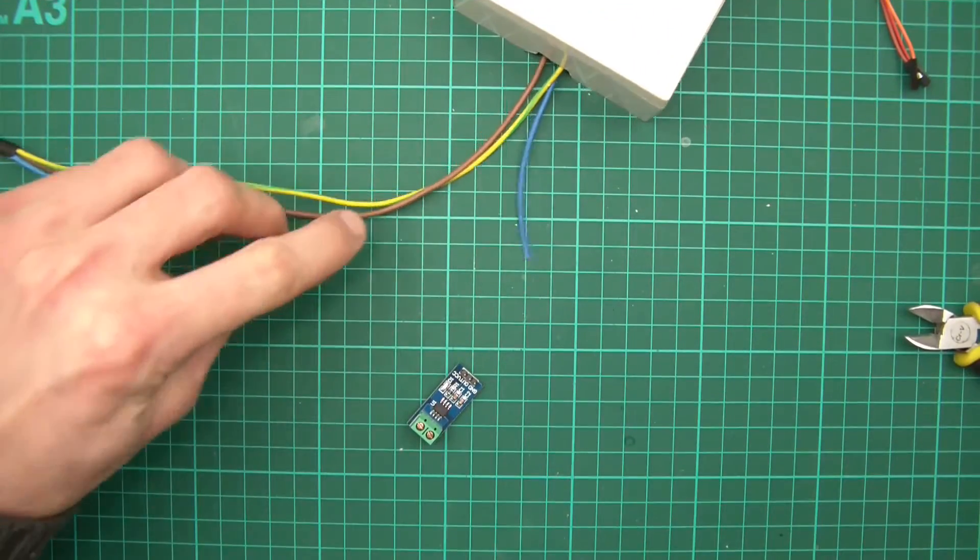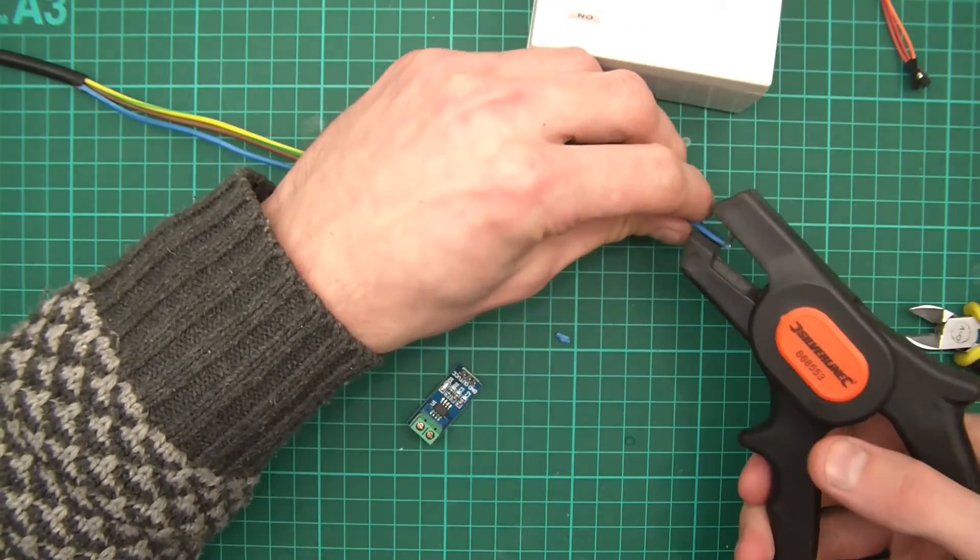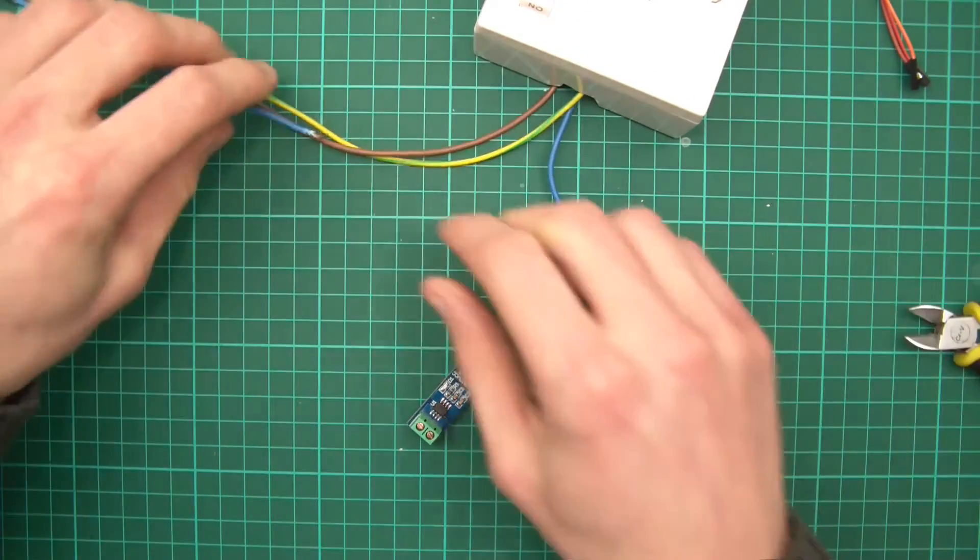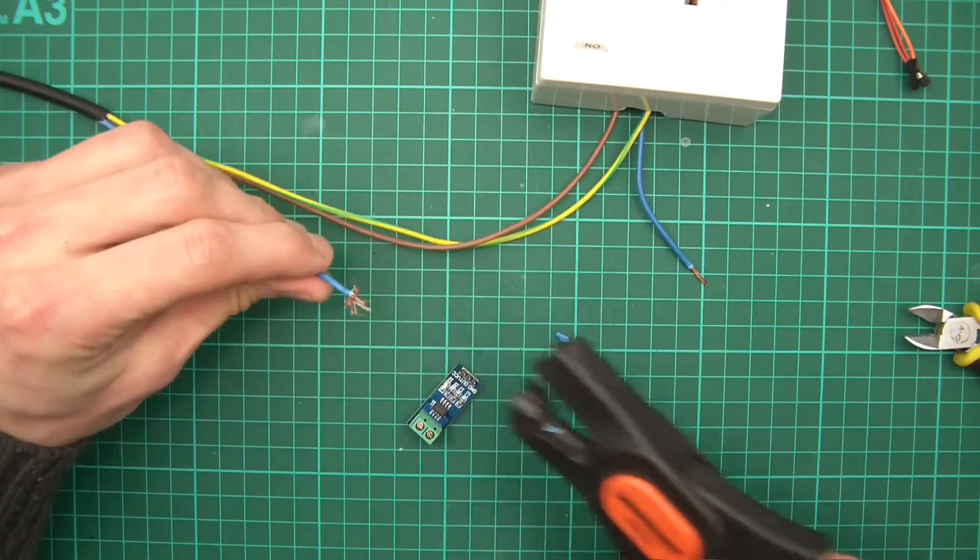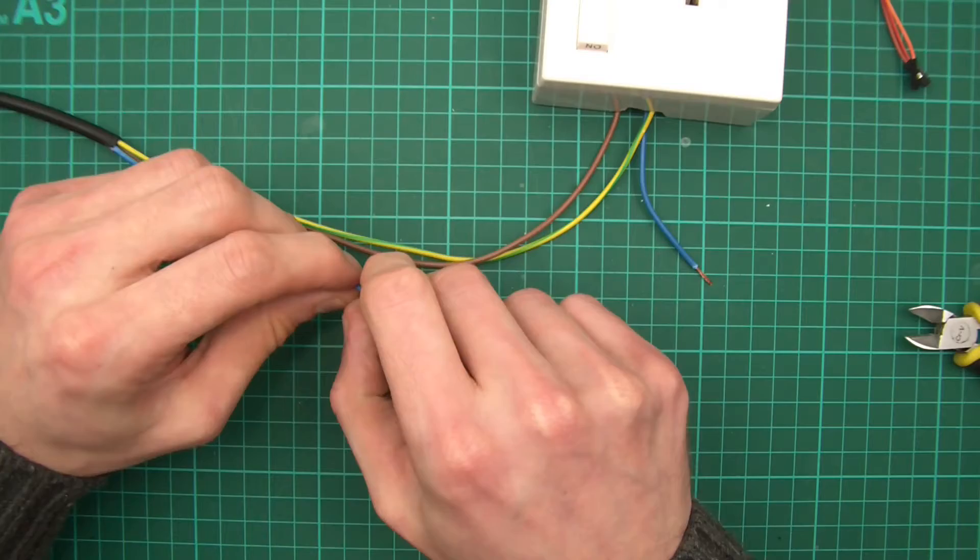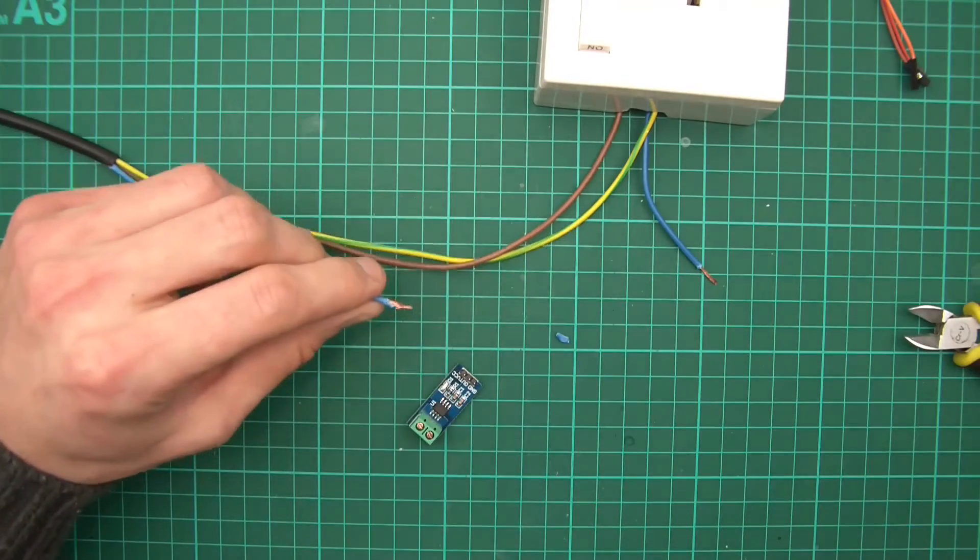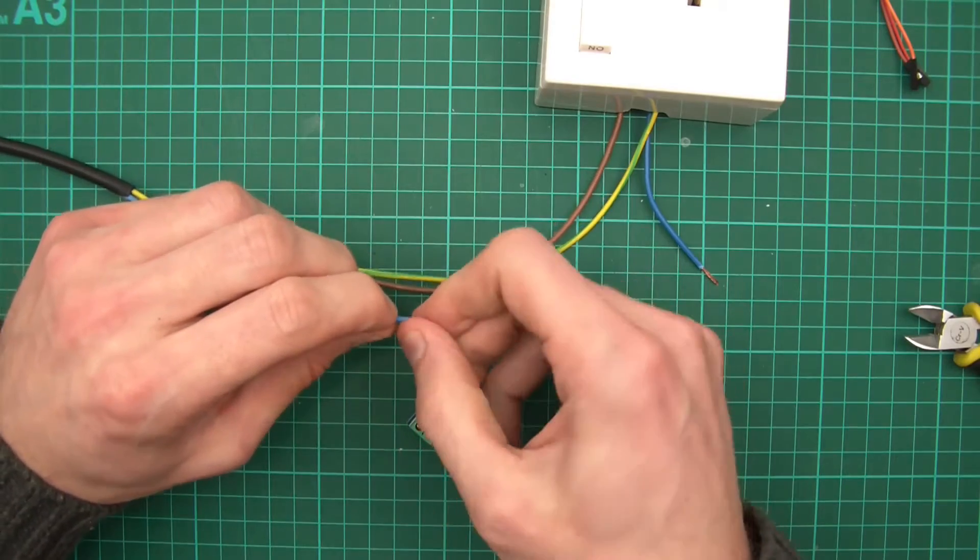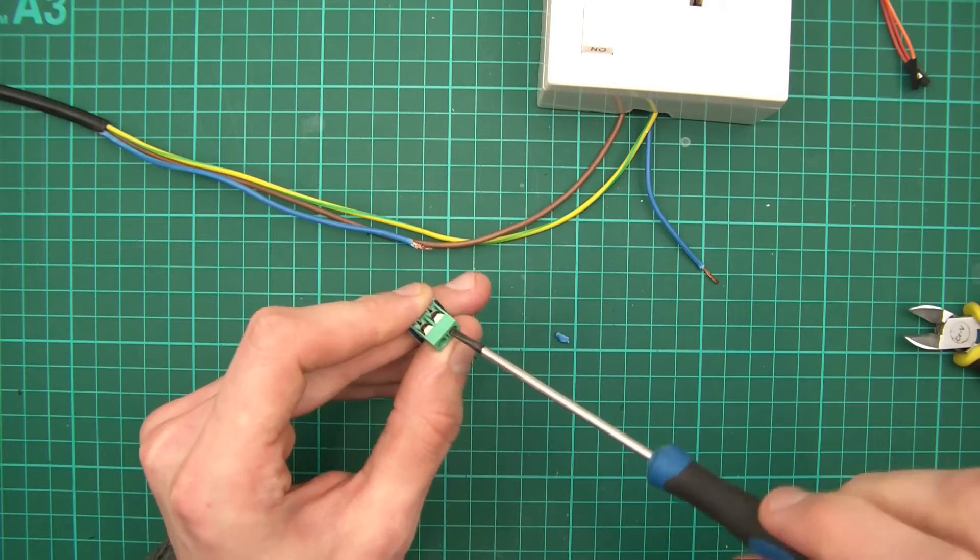I need to strip these wires here and feed these into the ACS 712. Right, that one hasn't quite cut, I'll do that one again. I've been looking for a decent wire stripper for some time. I've been trying different ones out to see which one I prefer, and I'm not actually that favorable about this one. It seems okay, but I don't know.